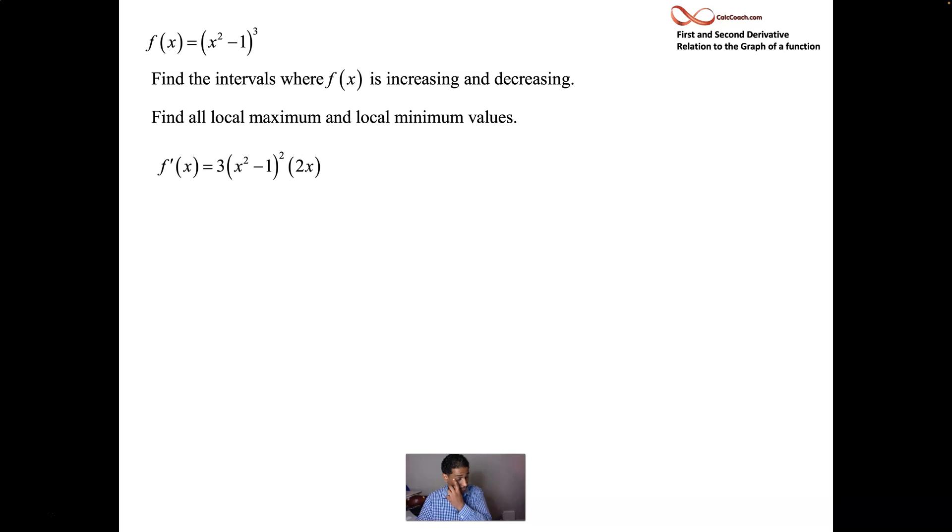Our function is x squared minus 1. The entire function is cubed. We want to use the first derivative test to find and classify the critical points, critical numbers. Or actually, let's just answer this question. Where is it increasing? Where is it decreasing? And find all the local maximum and local minimum values.